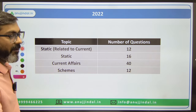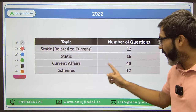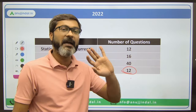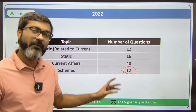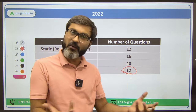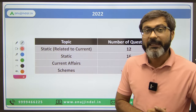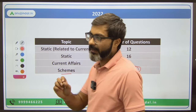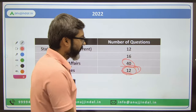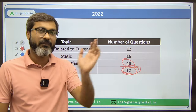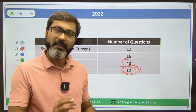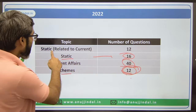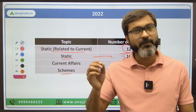In 2022, they made some changes. They increased the number of questions from schemes, and the questions were more difficult - longer questions were introduced in Phase 1. The current affairs weightage was still around 40, but the scheme questions surprised many candidates. Static questions were 16 and static related to current were 12.